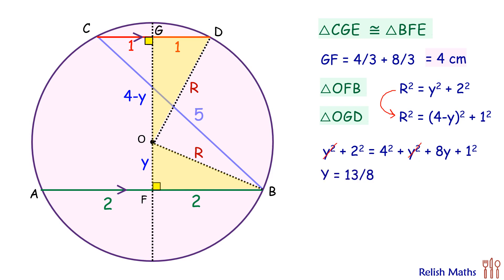Putting this value in our first equation, we'll get R squared as 13 by 8 squared plus 2 squared. Solving it, we'll get the value of R as 5 root 17 by 8 centimeters, and that's our answer.